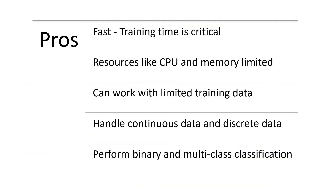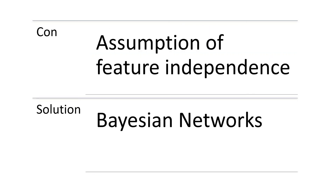The advantages of using the Naive Bayes model are that it is fast, making it useful when training time is critical. When resources like CPU and memory are limited, it is a good model to consider. It works well with limited training data, can handle both continuous and discrete data, and requires no modifications when performing binary or multi-class classification. A major disadvantage is the assumption of feature independence, which may not hold in the real world. A possible solution is the Bayesian network.